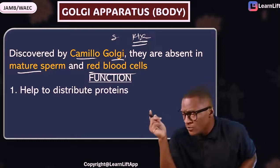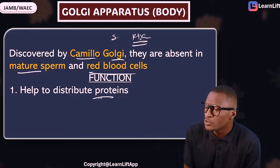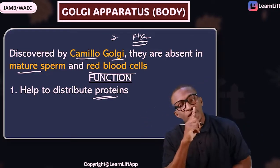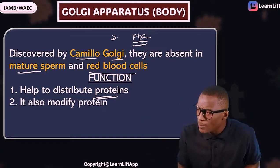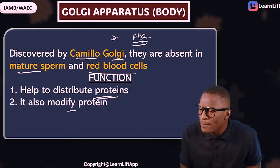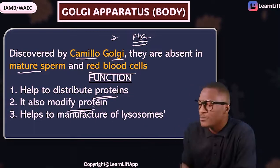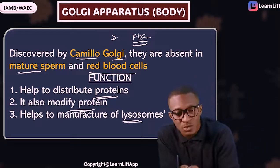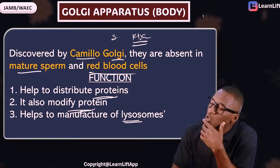Now, what are the functions of the Golgi apparatus? First, they distribute proteins. Second, they modify proteins. Third, they are involved in the manufacture of lysosomes — because lysosomes consist of hydrolytic enzymes.